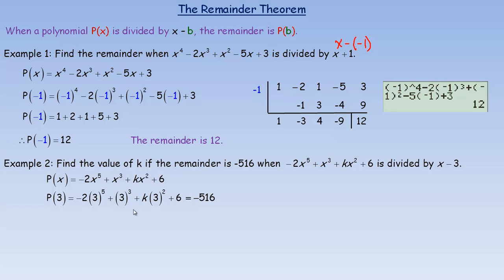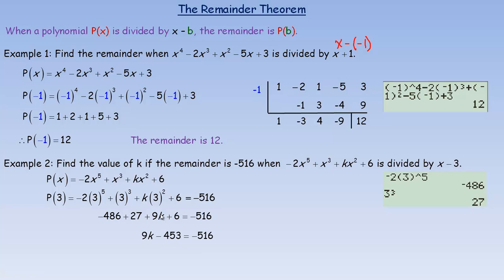Evaluating: negative 2 times 3 to the fifth is negative 486. 3 cubed is 27, and 3 squared is 9, so we have 9k. Filling everything in: negative 486 plus 27, plus 9k, plus 6 equals negative 516. Adding 6, 27, and negative 486 gives negative 453. So 9k minus 453 equals negative 516. Adding 453 to both sides gives 9k equals negative 63, so k equals negative 7.